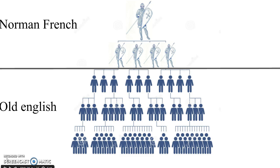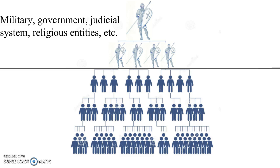In addition, being at the top of the hierarchy created a split in England. The upper class spoke Norman French while the lower class Anglo-Saxons spoke Old English. At the top of the hierarchy, the Normans were in charge of the military, government, judicial system, religious entities, and much more. As a result, all the terms used to refer to things within these entities, such as judge and battle, ended up being borrowed into English. This happened in three main ways.